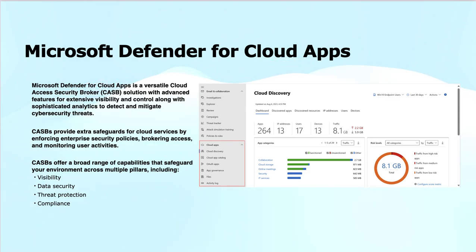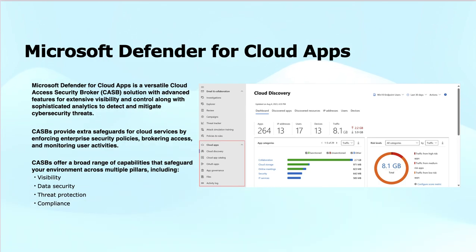In terms of key features of CASB: number one is visibility — it helps you see what is happening in your cloud services, like which apps are being used and by whom. Because it is acting as a proxy and letting all the endpoints connect to the cloud applications, it can help you gain this visibility. Number two is data security — it can protect your sensitive data in the cloud by enforcing security policies.